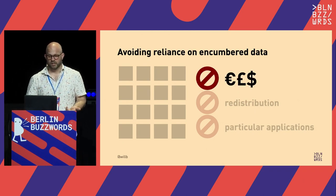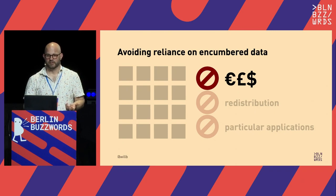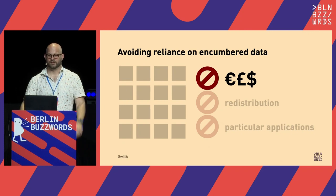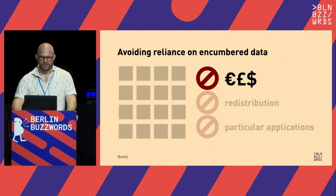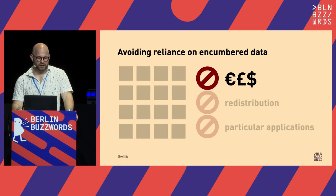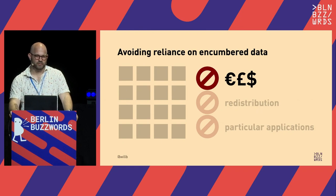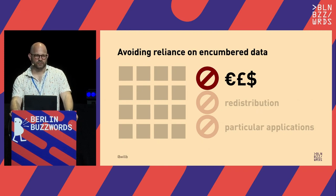The first example is a commercial use restriction. This seems pretty simple — you're making money, it's commercial use. But I actually think this gets tricky. If I'm conducting research inside a company and I want to publish it, is that commercial use? If I want to publish it in an open access journal, is that commercial use?